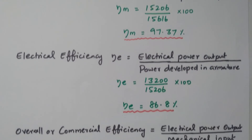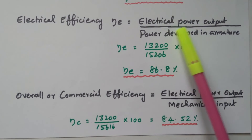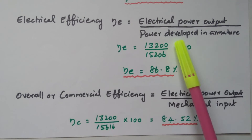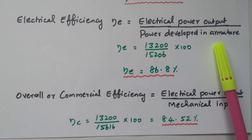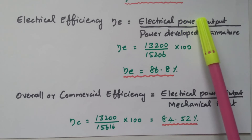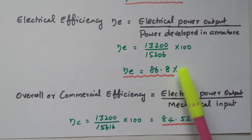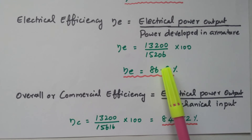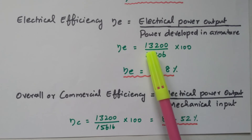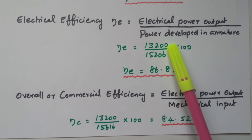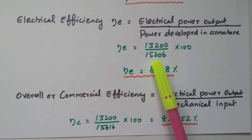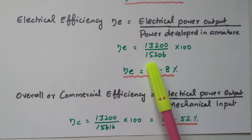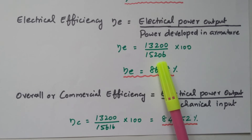Now we will go to the electrical efficiency. Electrical efficiency = electrical power output / power developed in the armature. Power developed in the armature is 15,206 watts; after copper losses, the remaining is available as electrical power output, which is 13,200 watts. So: 13,200 / 15,206 × 100 = 86.8%. The electrical efficiency is 86.8%.